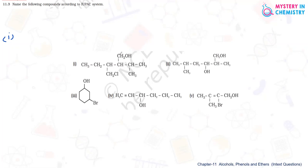The longest carbon chain containing the OH group is 1-2-3-4-5, pentane. At the first carbon atom, the OH group is present, so we number it such that the carbon containing the OH group gets the least number. At the third carbon atom, a chloromethyl group is present, so we write 3-chloromethyl.